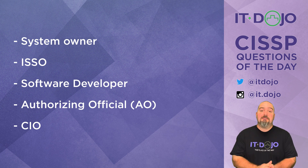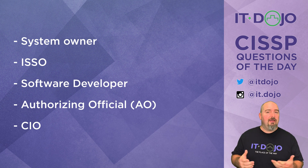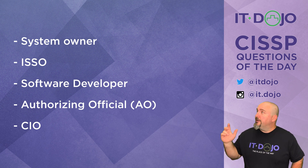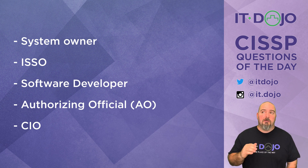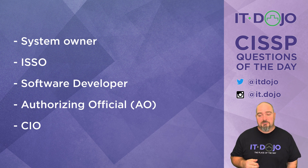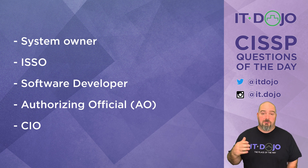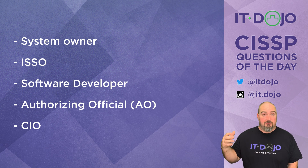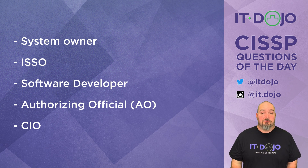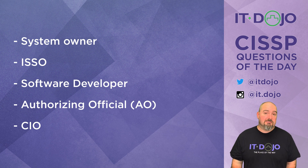Is it the ISSO? No. The ISSO's job does not include formally accepting the risk associated with a system. The ISSO is going to make sure that the security of the system is developed and implemented and that there's policy to make sure the system is adequately secured — but formal acceptance of risk is not the ISSO's job.